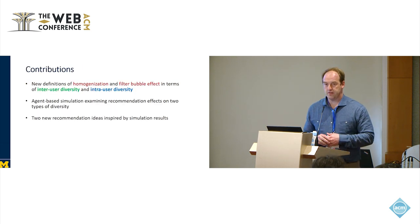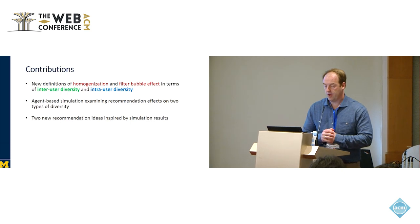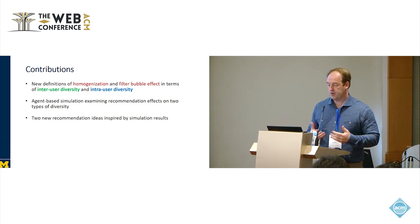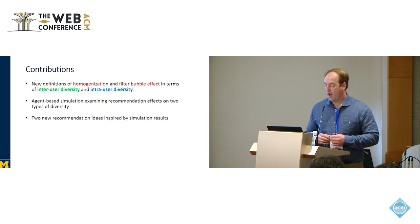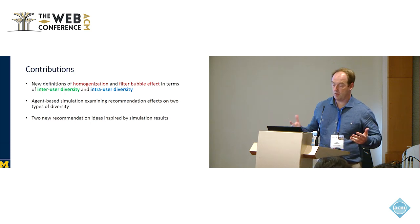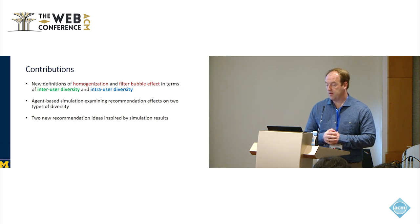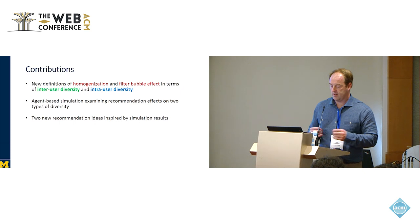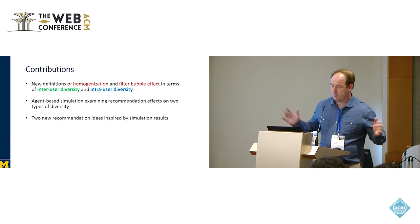The contributions of the paper are threefold. First, we create new definitions for homogenization and filter bubble effect in terms of inter and intra user diversity. Then we do agent-based model simulations to examine the effect of recommendation systems on these two types of diversity, and use those to explain homogenization and filter bubble effect. And then we look at two new recommendations that try to make different things happen.